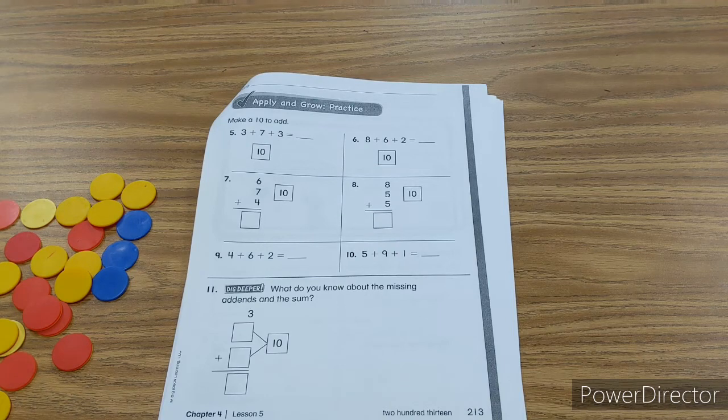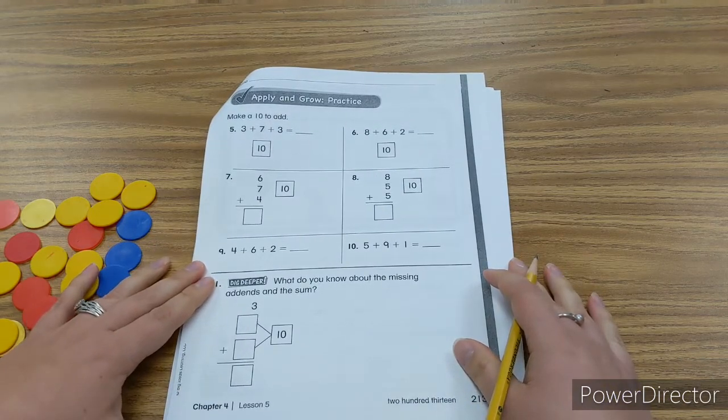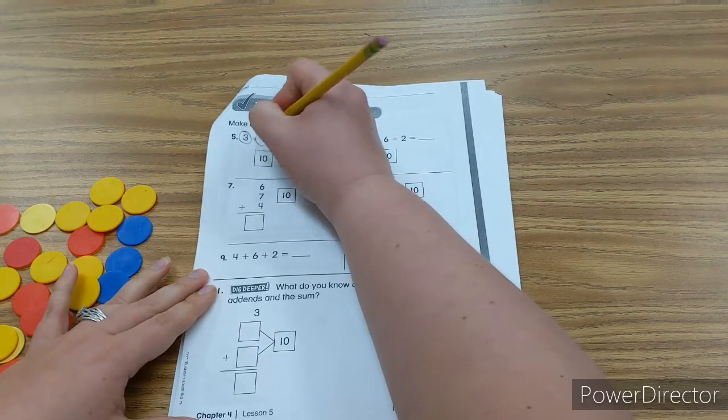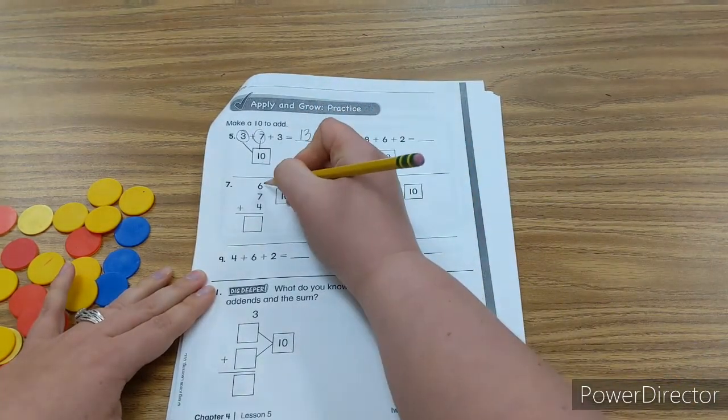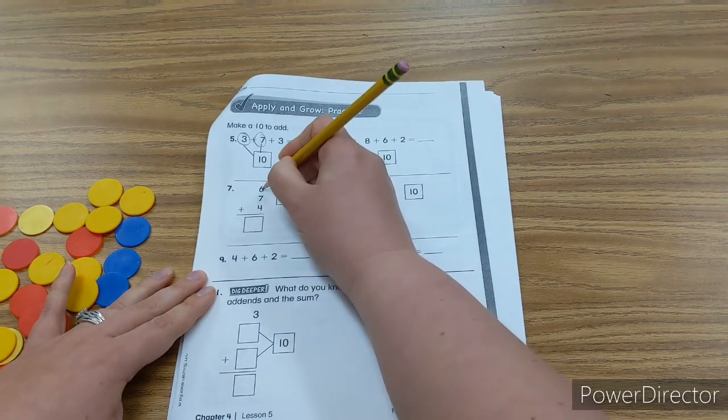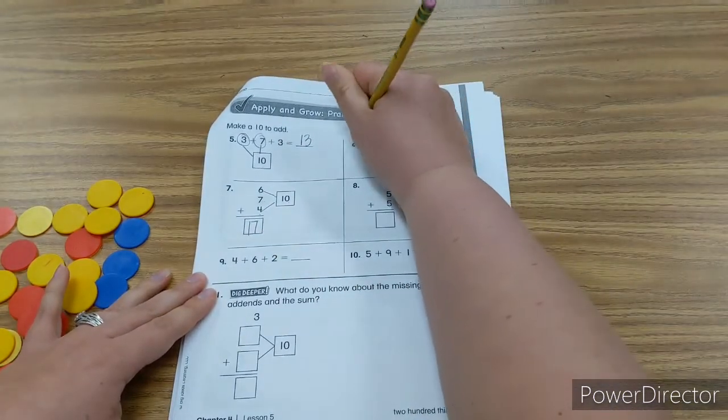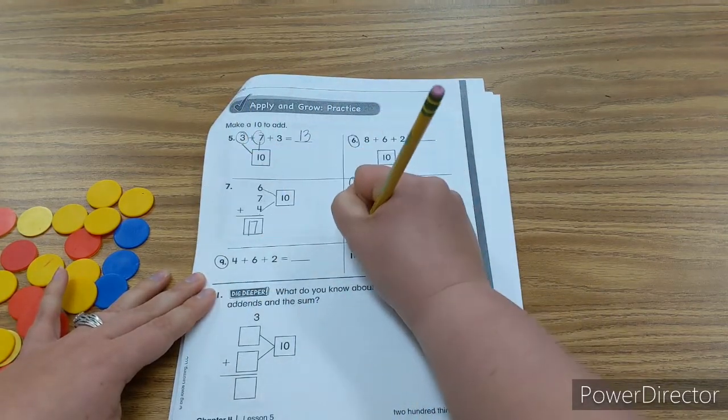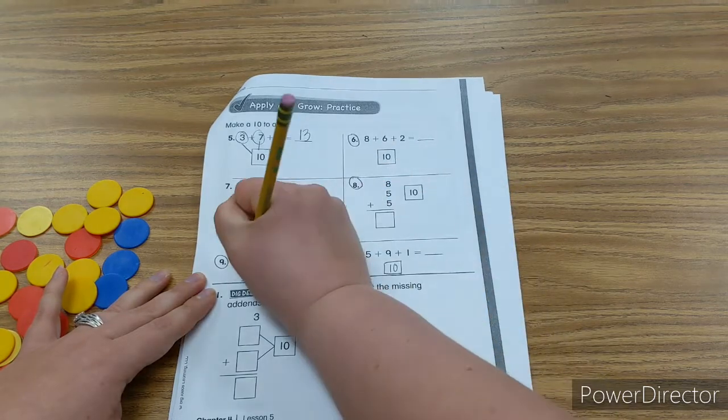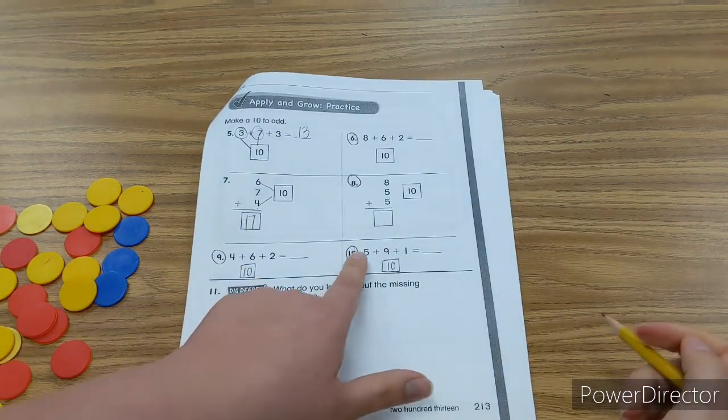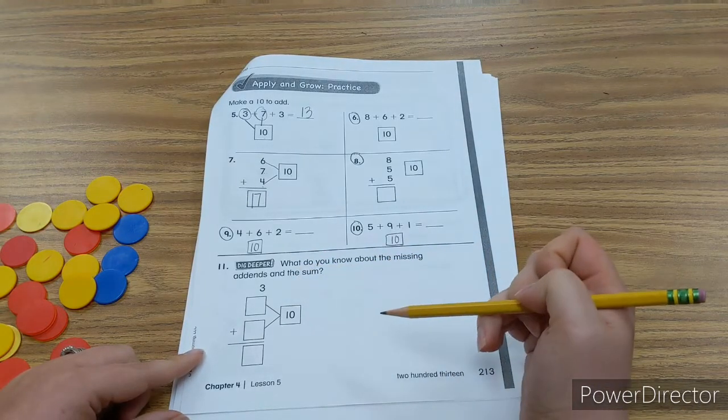So now we're on the apply and grow practice. Make a 10 to add. So again, you're going to make 10 and then add more. So we know that 3 and 7 make 10. 10 plus 3, 13. If I look at these numbers, 6, 7, and 4, I know that 6 and 4 make 10. And 10 plus 7 equals 17. So I want you to do that for 6, 8, 9, and 10. And I'm going to just add your box down here. And it needs to make 10. So which two of these numbers are going to make 10, and you're going to draw your line to it. Go ahead and push pause and then push play when you're ready.